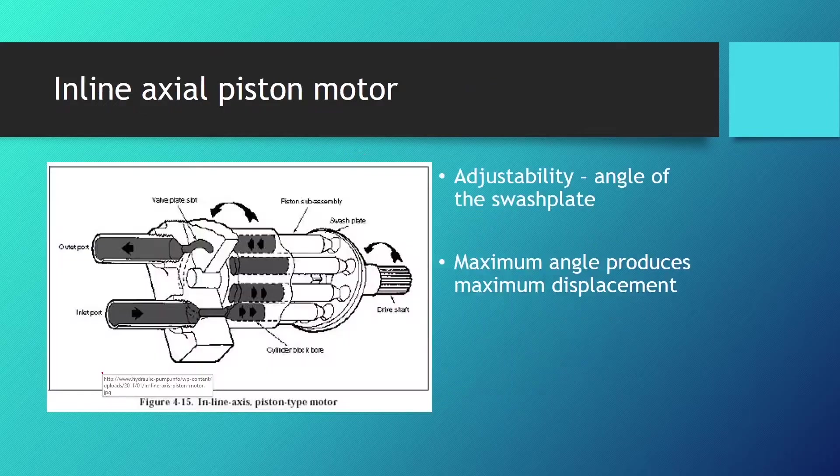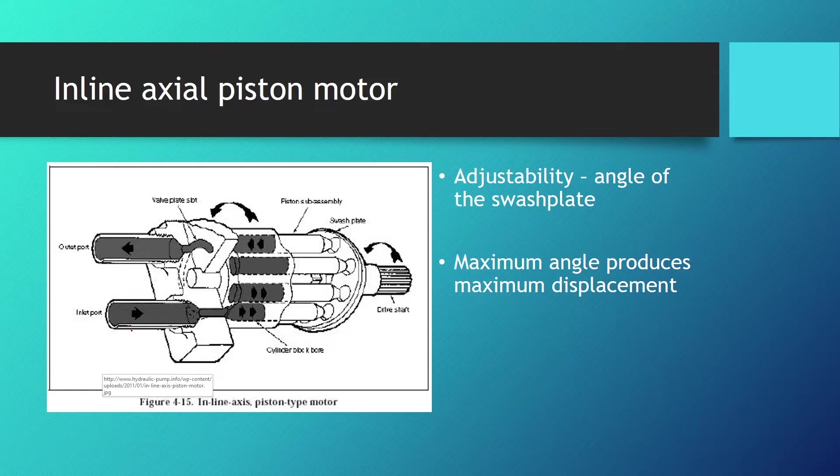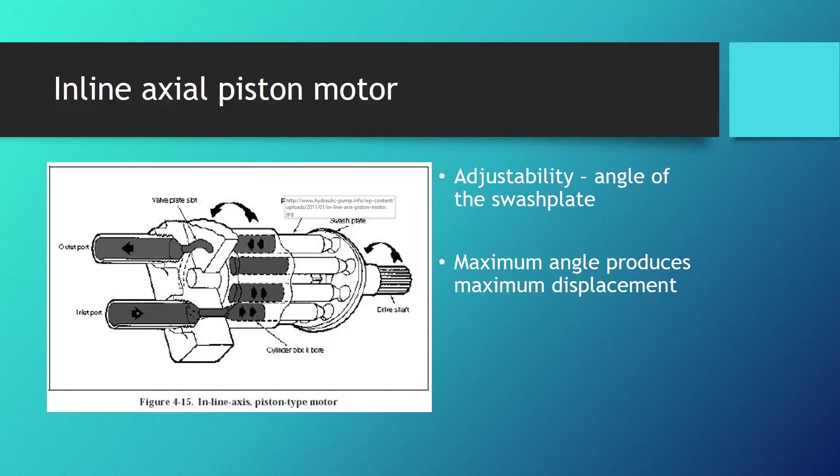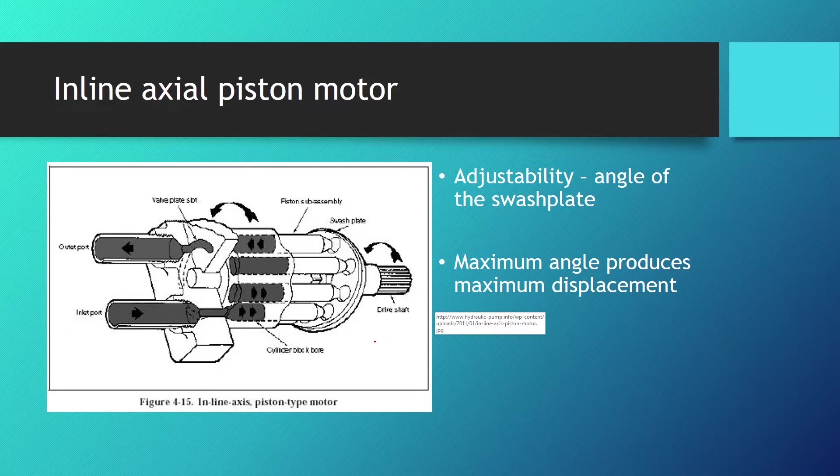Inline axis piston type motors are almost identical to the pumps. There are built-in fixed and variable displacement models and torque is developed by a pressure drop in these units. Pressure exerts a force on the ends of the pistons or plungers which is translated into shaft rotation. The shaft rotation of most models can be reversed any time by reversing the flow direction.